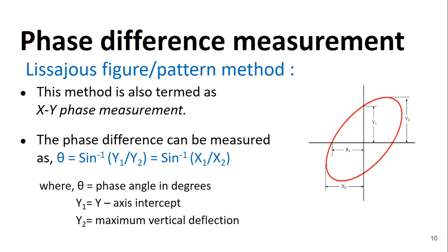In the same way, X1 is the X-axis intercept, that is the distance from the Y-axis to the point where the Lissajous pattern crosses the X-axis, and X2 is the maximum horizontal deflection, as shown in the figure. By measuring the values of X1, Y1 or X2, Y2, we can determine the value of theta, that is the phase difference.